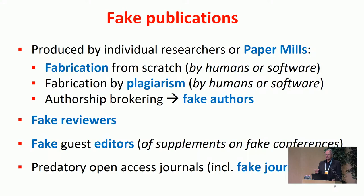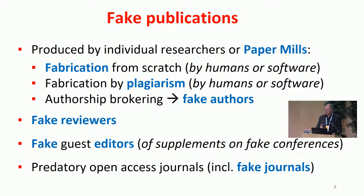Second problem: fake publications. You've all heard about paper mills — it's a big thing nowadays. Papers are fabricated either by individual researchers or by organizations we label as paper mills. They make them from scratch. Humans can do that, software can do that; ChatGPT is a great tool for paper mills and they use it abundantly already. You can also plagiarize other papers, translate them, put pieces together, and there is good software for doing that while also evading plagiarism detection software.